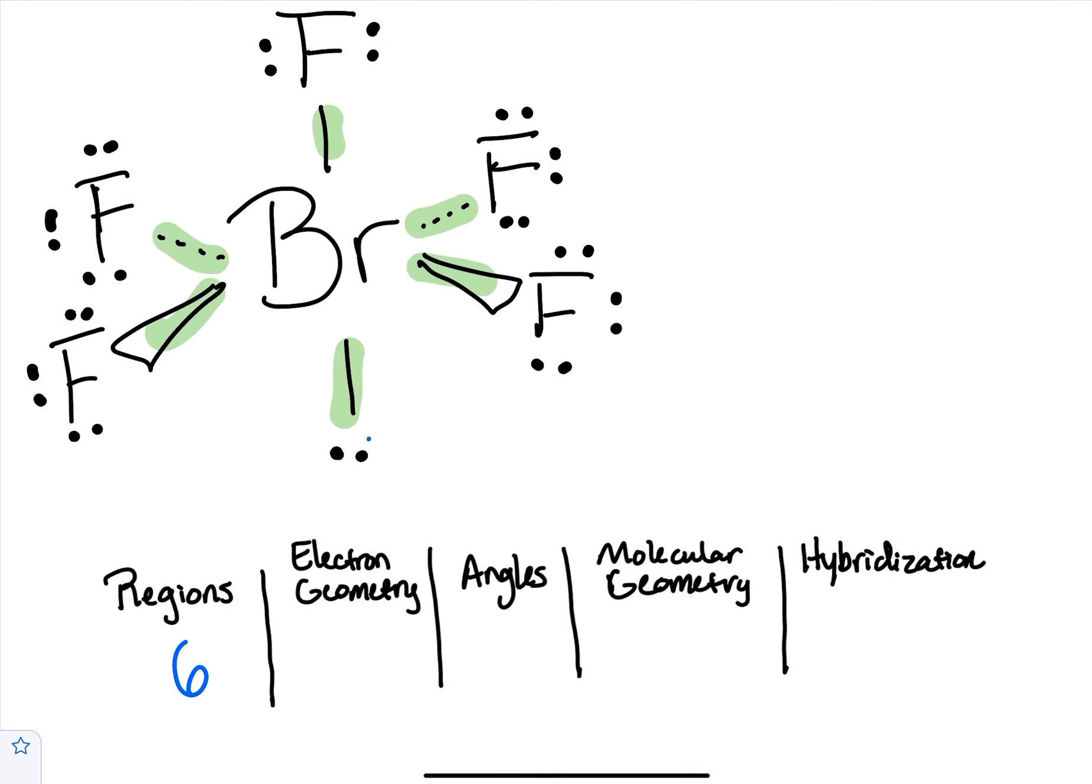Now I know there's that lone pair but we pretend it isn't there and we pretend we've got our square going down there and then a square pyramid going up. So that's octahedral, angles 90 and 180.